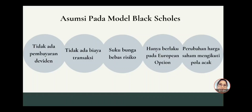Berikutnya yaitu asumsi keempat, hanya berlaku pada European option; pada European option penggunaan opsi pada tanggal jatuh tempo, sedangkan dalam American option penggunaan option sebelum tanggal jatuh tempo, sehingga apabila menggunakan American option tidak akan menguntungkan penggunaan option sebelum waktunya karena menggunakan opsi akan berdampak kepada pemegang opsi yaitu premi waktunya dari option tersebut hilang. Kelima yaitu perubahan harga saham mengikuti pola acak; untuk menentukan harga saham perlu suatu asumsi tentang pergerakan harga saham di pasar berdasarkan proses difusi atau proses acak, di mana harga saham bergerak ke beberapa harga sehingga mengalami perubahan harga yang tidak berhubungan atau continuum.